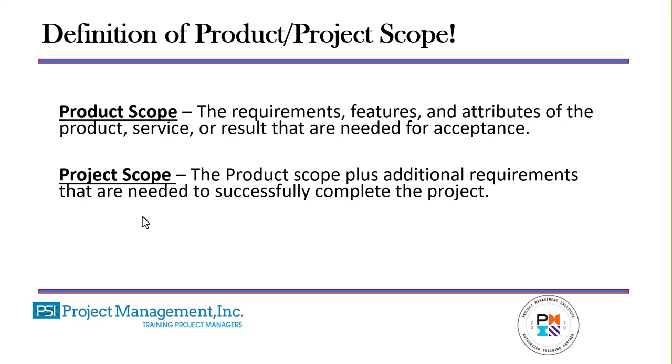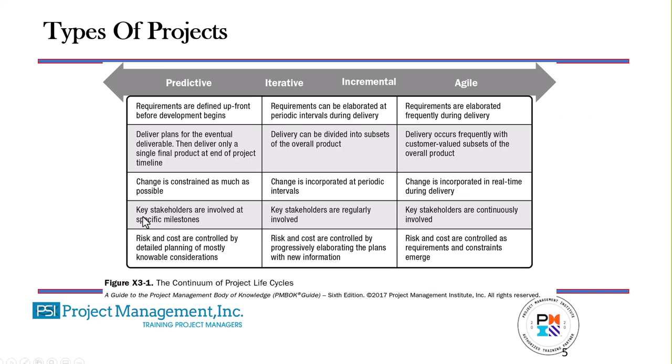Scope means different things to different methodologies — different methods of managing projects. In a predictive project, we have identified the scope up front, and we are then going to execute that scope. We might do this using progressive elaboration, meaning as we learn more about the project, we update the plan and documents to reflect that new knowledge. In predictive project management, the biggest part of the requirements will be identified up front — such as if you are building a building.